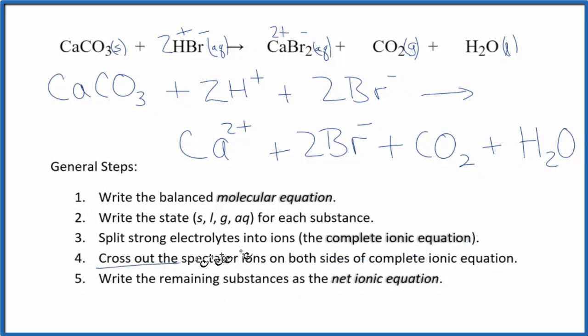Now we can cross out those spectator ions. They're on both sides of the complete ionic equation. When I look, I see the only thing that's the same in the reactants and in the products, that's going to be that bromide ion, those two bromide ions right here and in the products. Let's cross those out. Everything else makes up our net ionic equation for calcium carbonate plus hydrobromic acid.